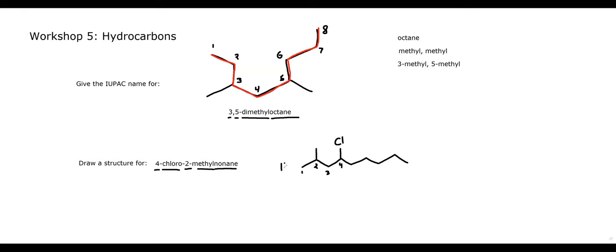If you want to put the actual methyl groups CH3 on the ends of the chain, that's perfectly fine. A lot of people prefer that just so you have all the ends filled in, but you can also leave methyl groups as lines. So there's 4-chloro-2-methyl-nonane: a nine-carbon chain with a methyl group on the second carbon and a chlorine on the fourth carbon.